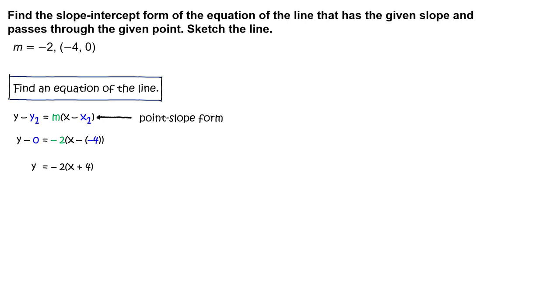Simplify to get y equals negative 2 times the quantity x plus 4. Write the equation in slope-intercept form y equals negative 2x minus 8. So, an equation is y equals negative 2x minus 8.